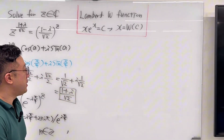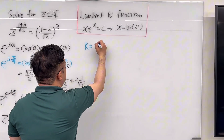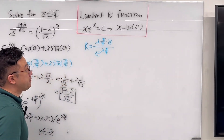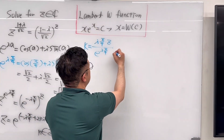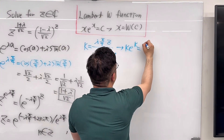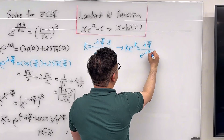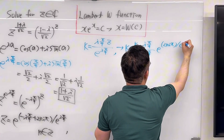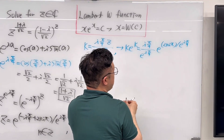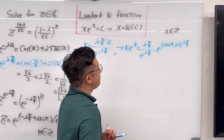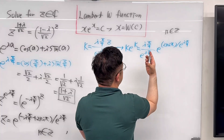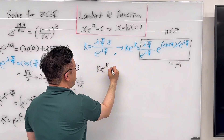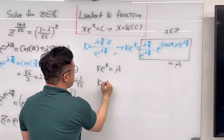Since we'll be using the Lambert W function, let me call k equal to i·pi/4 times z, divided by e to the power of i·pi/4. Then k times e to the power of k equals i·pi/4 divided by e^(i·pi/4), times e^(2n·i·pi) divided by e^(i·pi/4), where n is an integer. Calling this entire right-hand side expression 'a', we have k·e^k equals a, so k equals Lambert W of a.